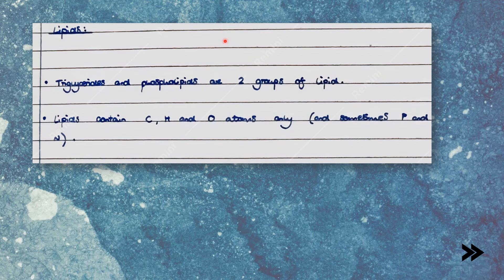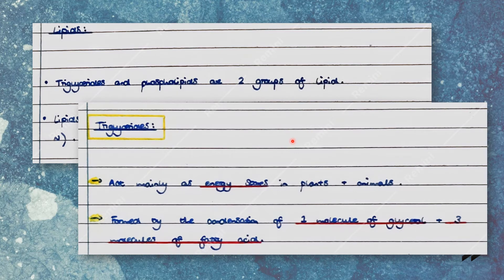Triglycerides and phospholipids are two groups of lipid. Lipids contain the elements carbon, hydrogen and oxygen, and sometimes phosphorus and sometimes nitrogen. Triglycerides mainly act as energy stores in plants and animals. They are formed by the condensation of one molecule of glycerol and three molecules of fatty acid.